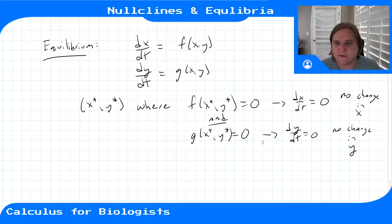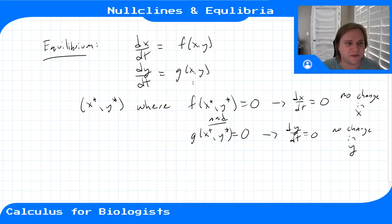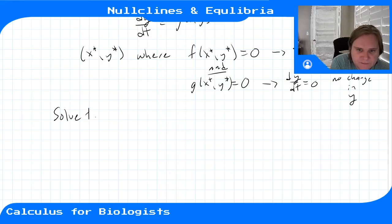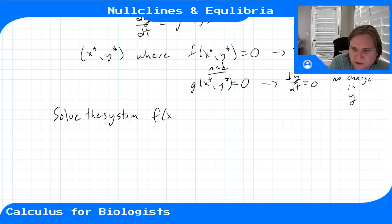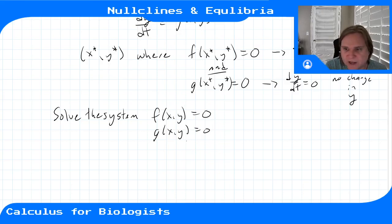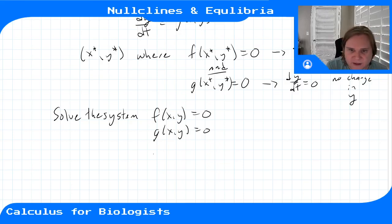Solving for a place where two functions are simultaneously zero is harder than finding the zero of just one function. We'd have to solve the system f(x,y) = 0 and g(x,y) = 0, which can typically be quite difficult. Algebraically, this can be tricky depending on the equations.